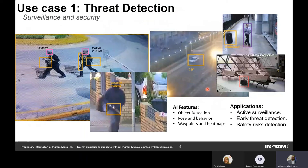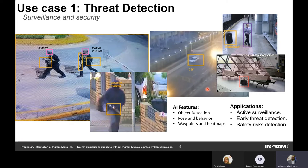The first use case is threat detection. The objective is early detection of threats — for example, in a bank, if someone on the street approaches holding a gun, knife, or any weapon, the camera captures that and the AI system analyzes the video stream. When such a person appears, the system automatically detects the weapon and gives an instant alarm to security guards in the bank or facility.